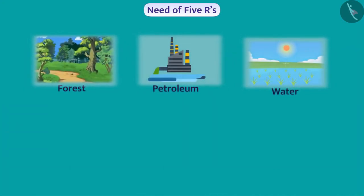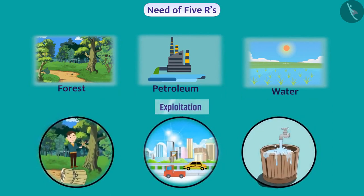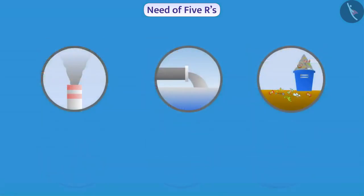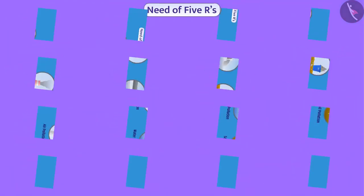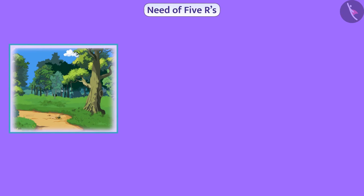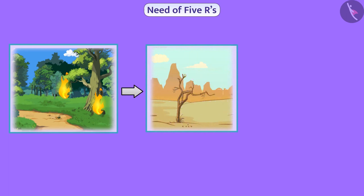Moving rapidly in the direction of development, we are exploiting these natural resources extensively. This is causing great harm to our environment. You must have seen or read about air pollution, water pollution, soil pollution, and their impact on the environment. Many natural resources are limited, and due to rapid exploitation, these resources are decreasing rapidly.